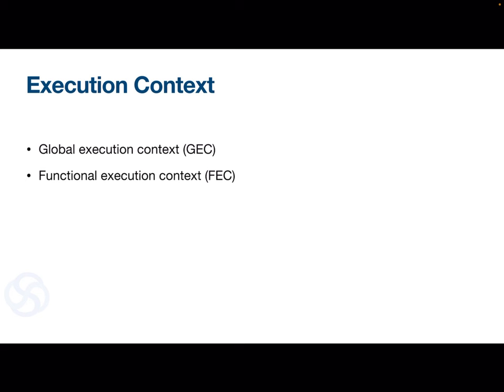This video will have two parts. The first will be a theoretical part and the second will be a practical part. In the theoretical part we will have an example and with the help of that example we will try to dry-run our code. We will also see how global and functional execution contexts are created and how line by line your commands are executing. In the practical part I will run that example in the browser and show you how global and functional execution contexts are created, how memory is created, and how your code is executing.